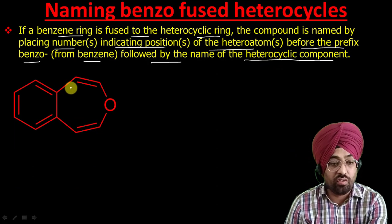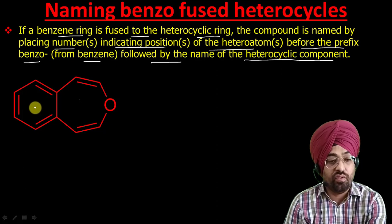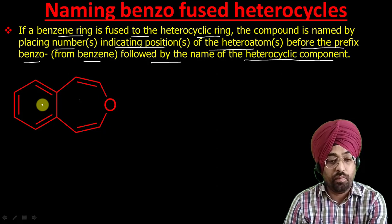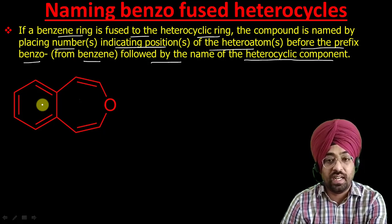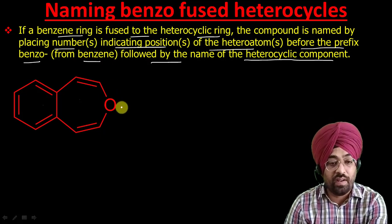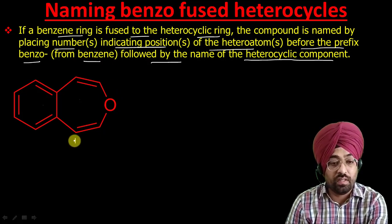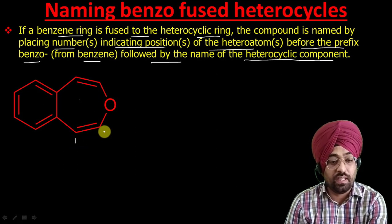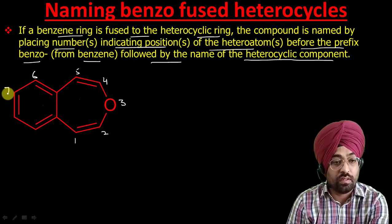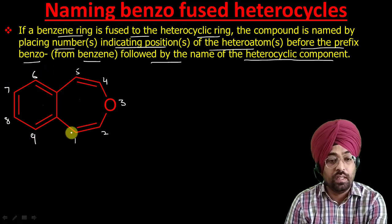Here we have a benzo-fused heterocycle in which the heterocyclic ring — oxepine — is fused to a benzene ring. According to this rule, the compound is named by placing numbers indicating the position of the hetero atom. For that, we number the compound: the numbering starts from the atom adjacent to the bridged center — one, two — and we give the minimum locant to the hetero atom: one, two, three, four, five, six, seven, eight, nine.